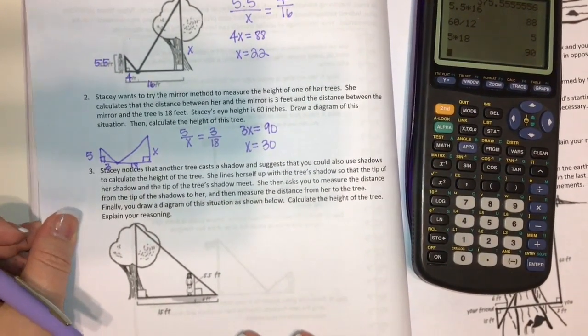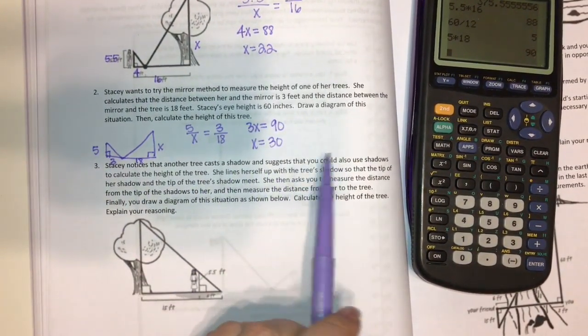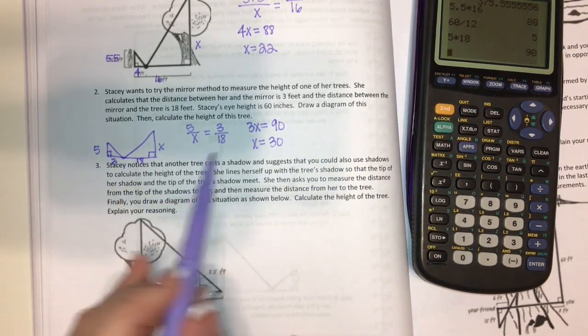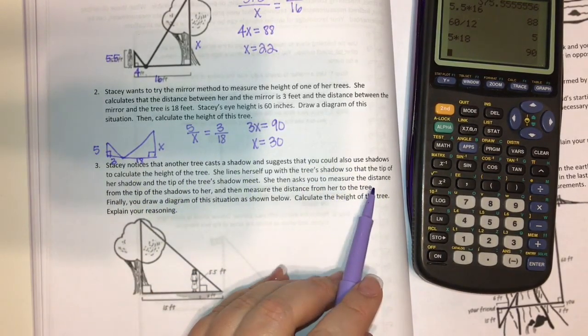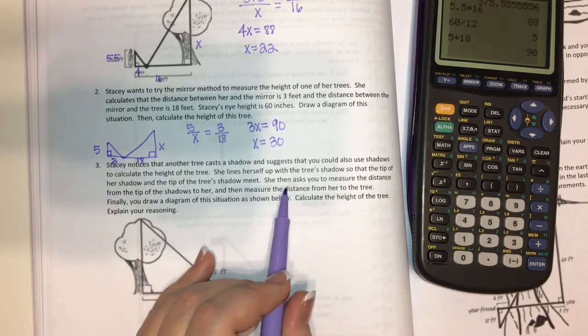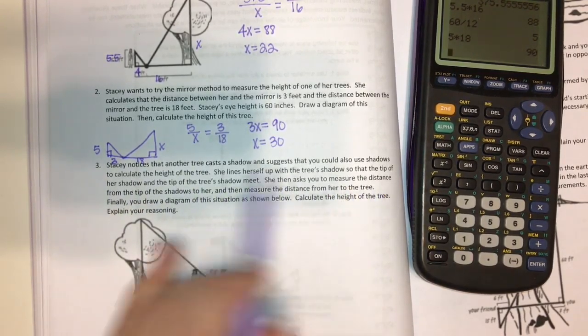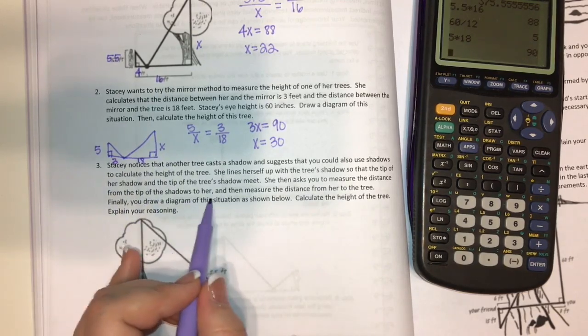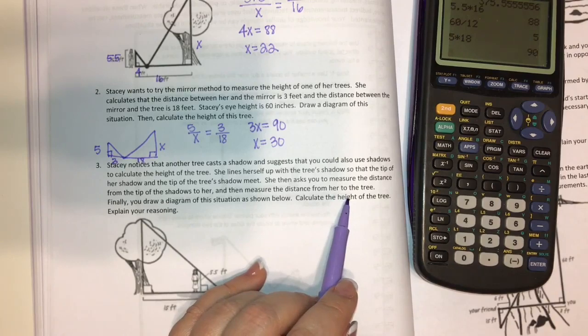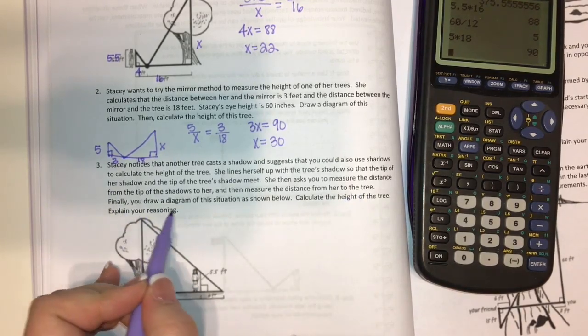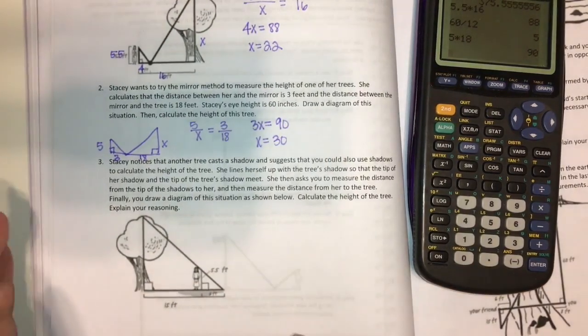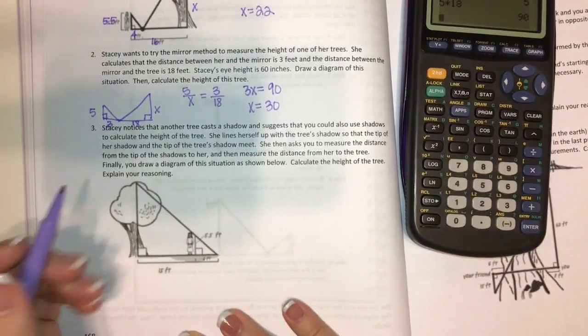Now we have Stacy again. Stacy notices that another tree cast a shadow and suggests that you could also use shadows to calculate the height of the tree. She lines herself up with the tree shadow so that the tip of her shadow and the tip of the tree shadow meet. She then asks you to measure the distance from the tip of the shadows to her and then measure the distance from her to the tree. Finally, you draw a diagram. Calculate the height of the tree.